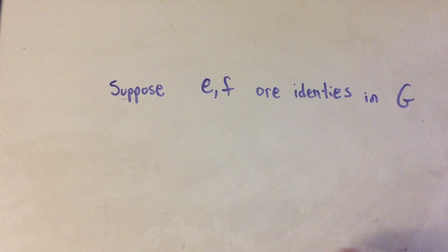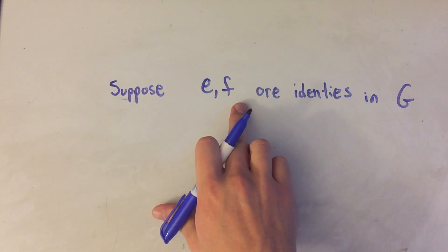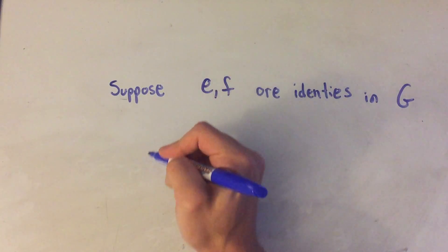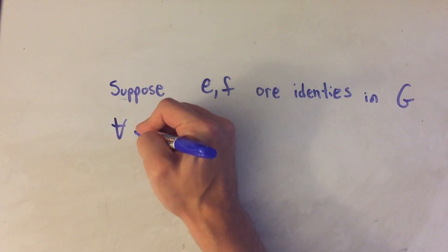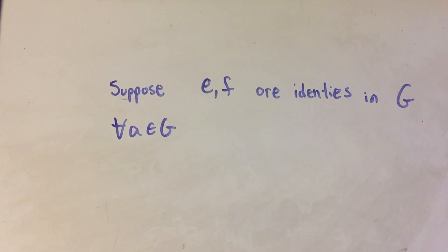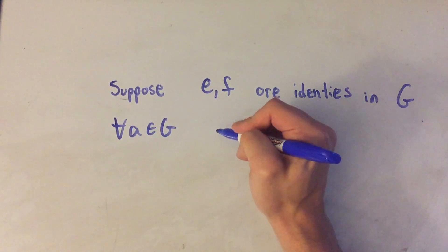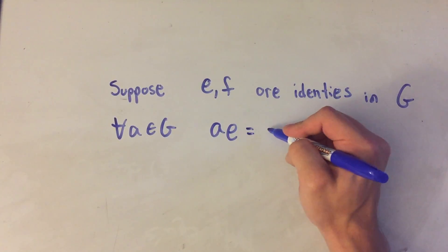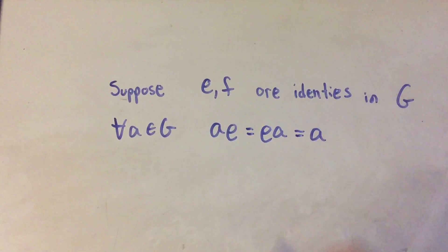Well what that means, and the reason I use E and F is because I don't know what kind of group I'm talking about so I'm just leaving this abstract. Well what that means for something to be an identity is that for all elements in G, so I'll say for all A in G, all elements A in G, that means that A times E is equal to E times A is equal to A. That's the definition of an identity in a group.